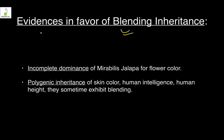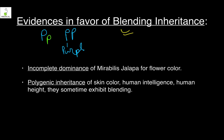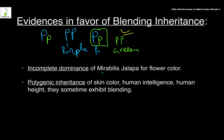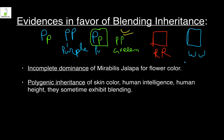Evidence for blending: in pea plants, if capital P is purple and small p is green, then PP and Pp both give purple — it is not a mixture. However, in Mirabilis jalapa, a red flower (RR) crossed with a white flower (WW) results in RW offspring, which is not pure red but pink. This is incomplete dominance — red color is not able to completely dominate white, resulting in pink.